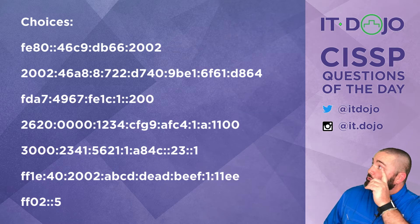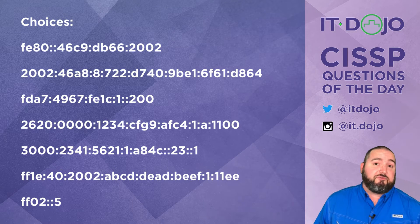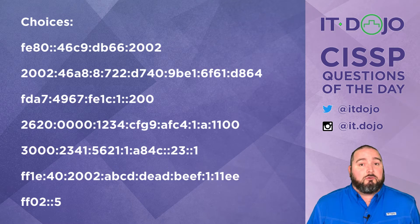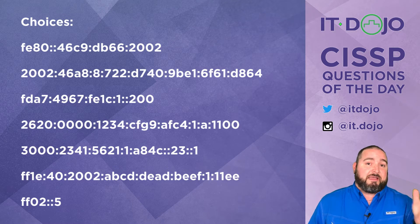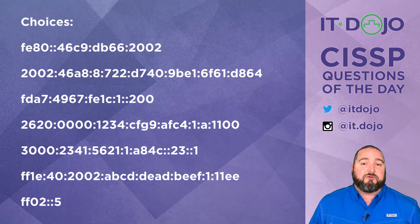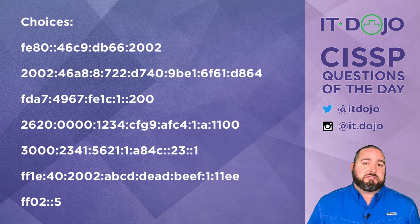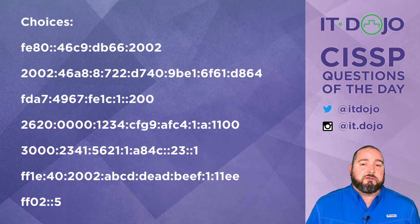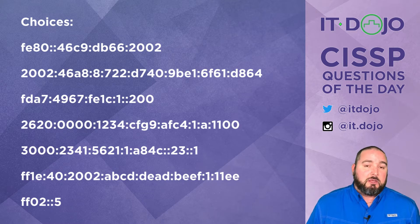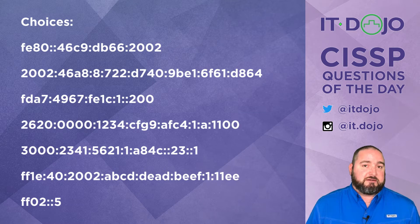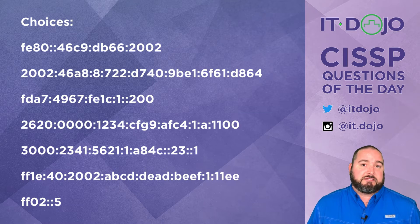Let's look at it. Choice number one: FE80 colon 469 and a bunch of other stuff — negative. FE80 screams link-local IPv6 address, and those are decidedly not routable, nor are they usable on the IPv6 internet. So that is not one of the correct answers.